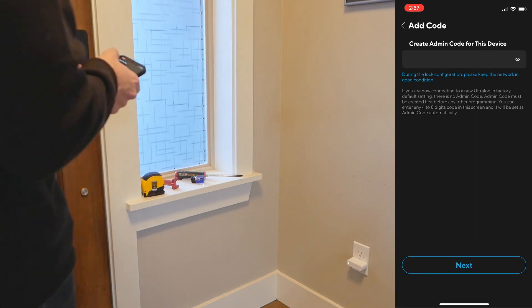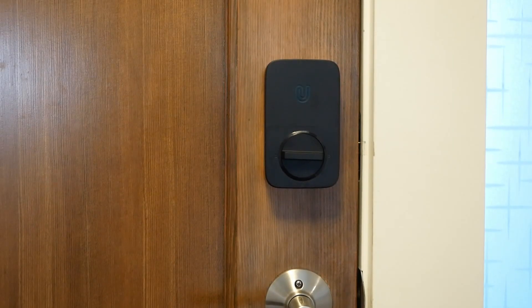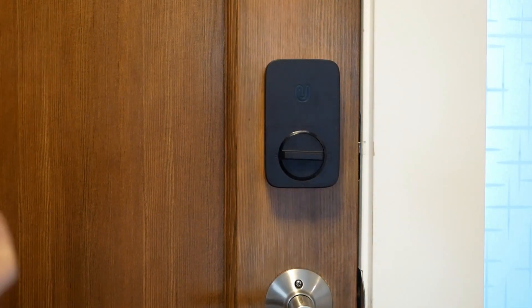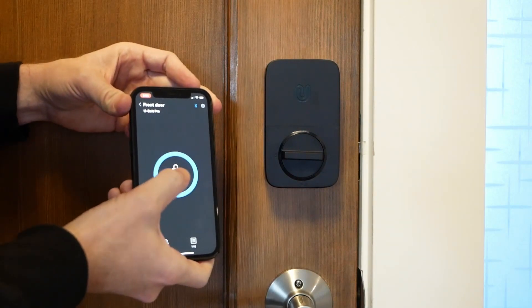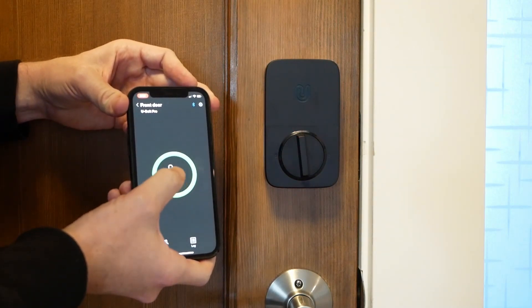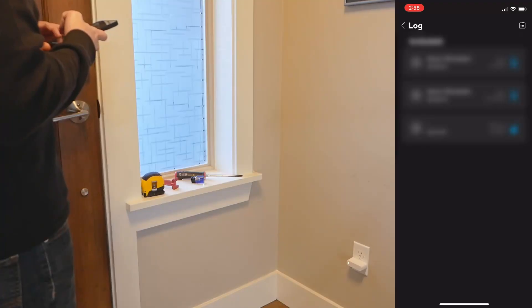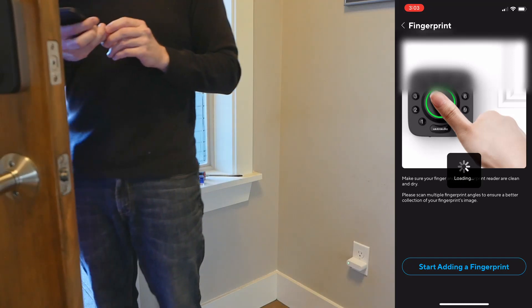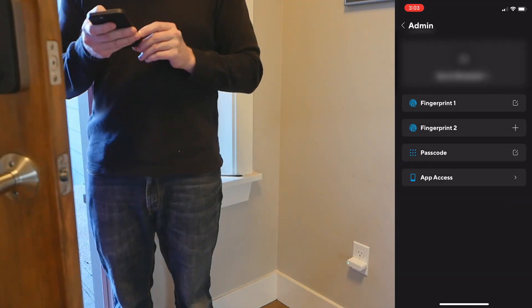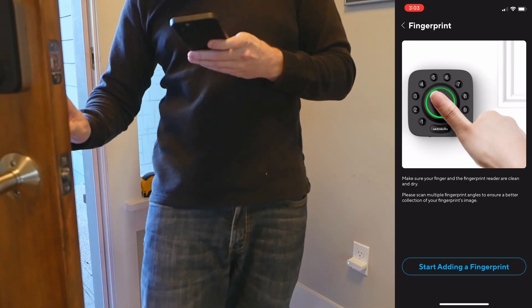From here the most obvious function is the ability to remotely lock and unlock one's door. That feature works really well. We can also view the activity log, set up fingerprints, view the battery level, set up notifications, set up a geofence for auto locking and unlocking, plus more.